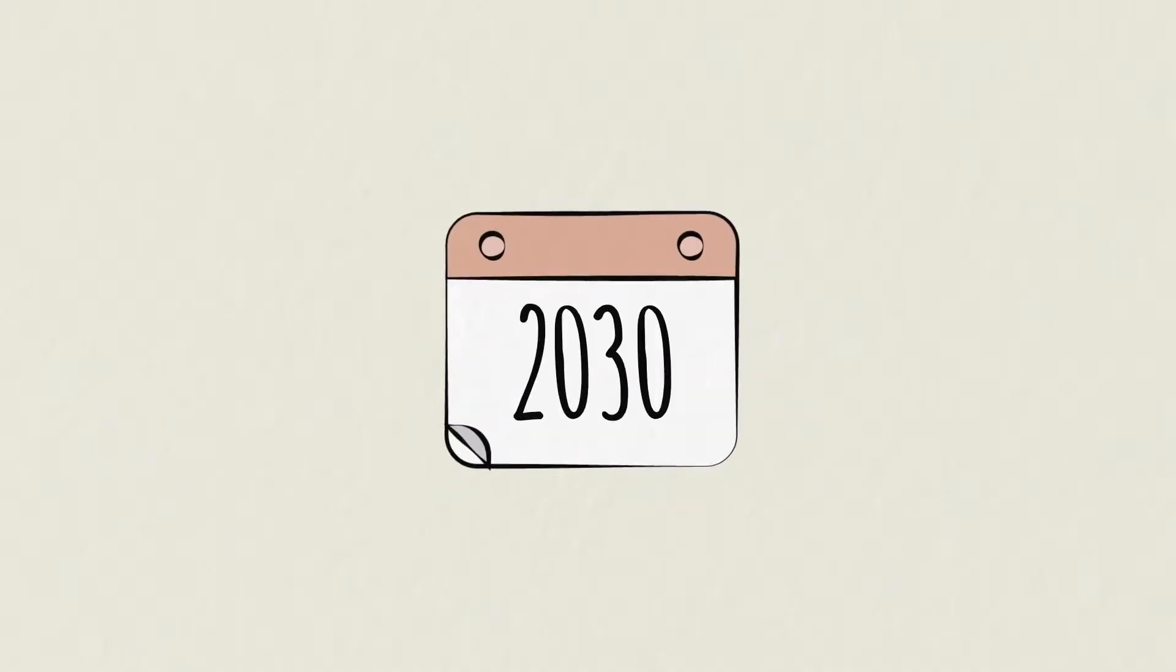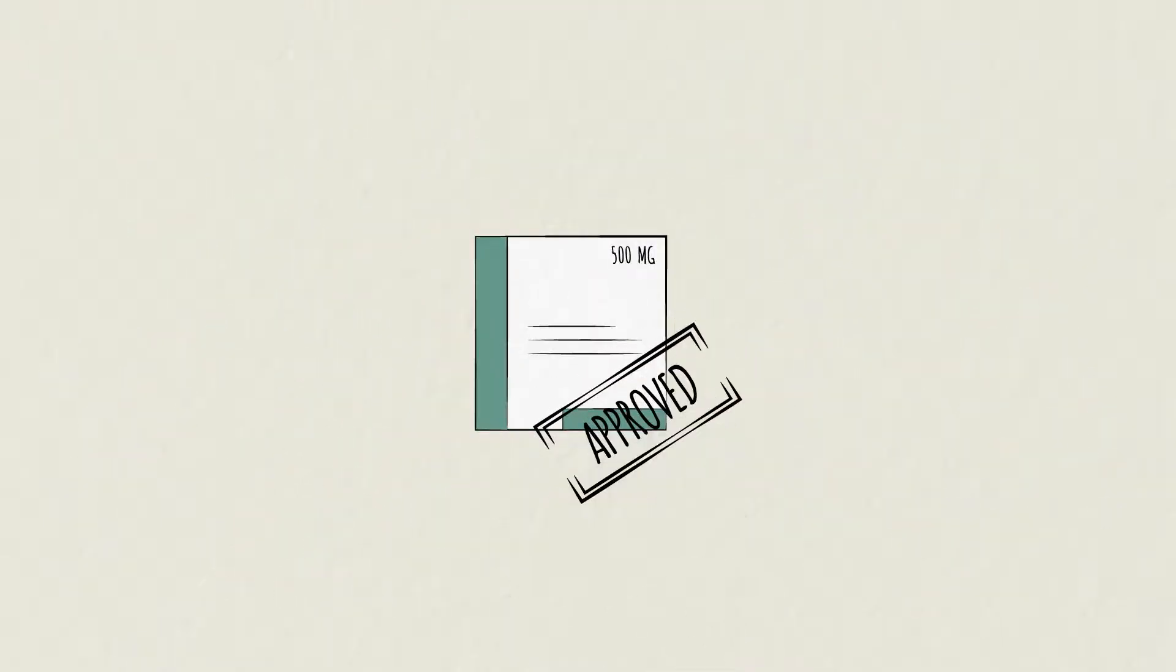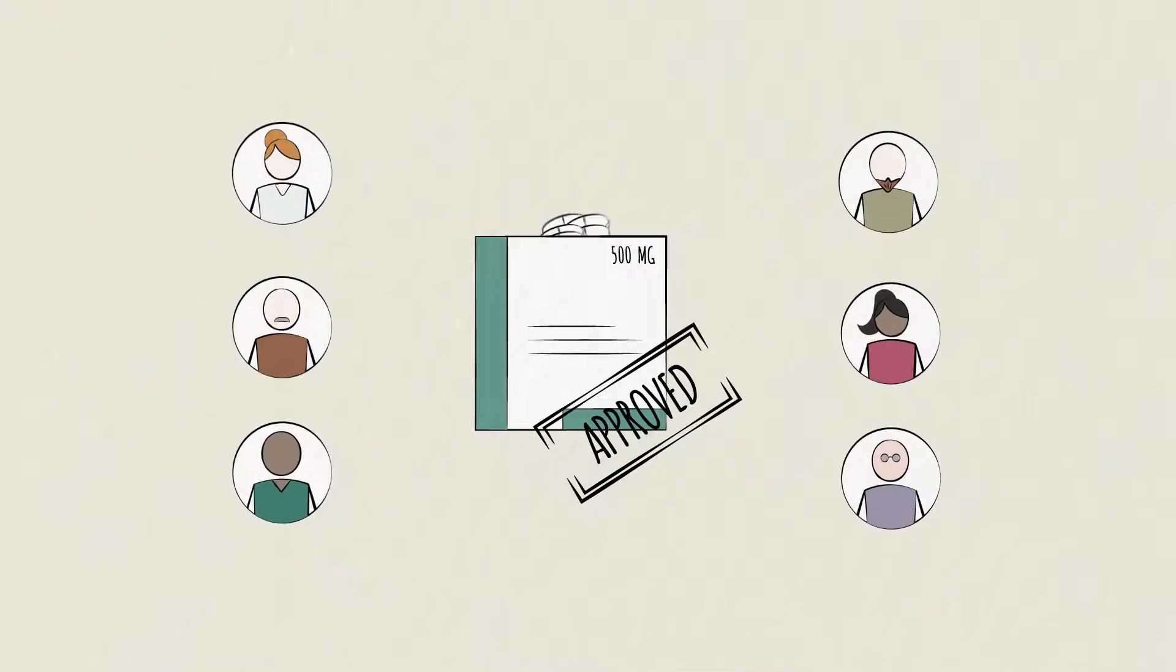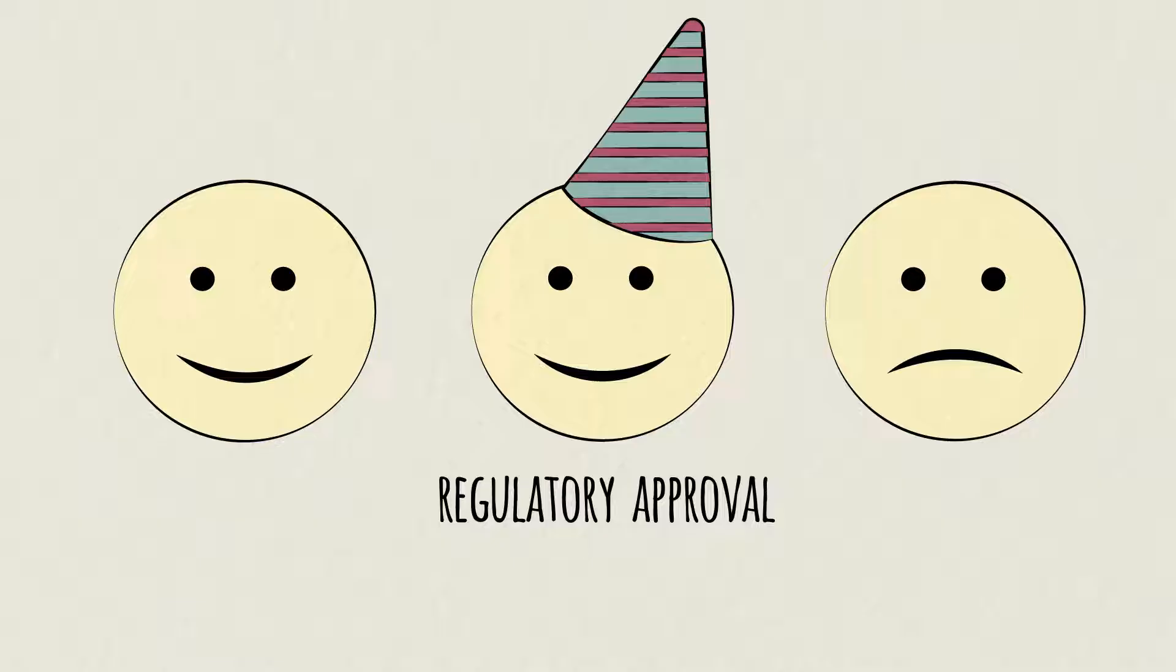It's 2030 and Anna's company is celebrating! Her Alzheimer's drug was just approved by the FDA, America's Food and Drug Administration. It can now be given to patients. Regulatory approval is one of three major milestones in a drug's lifecycle. There's also obtaining its patent and the expiration of the patent.